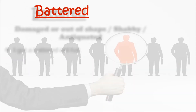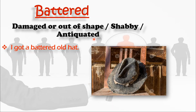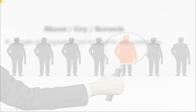The next word is battered. Battered means damaged or out of shape. Other words you can use: shabby, meaning very worn, or antiquated, meaning old. The sentence: 'I got a battered old hat.' It looks very dull and shabby — so it is a battered hat.